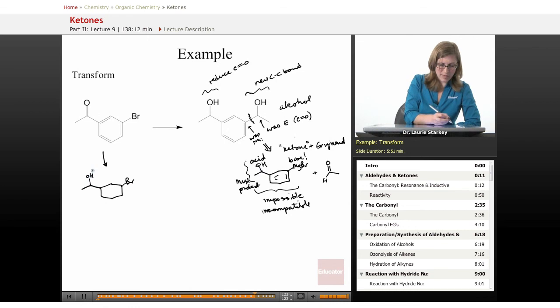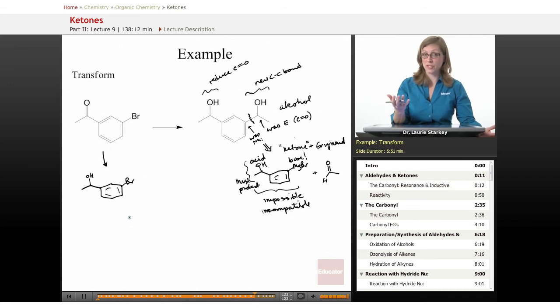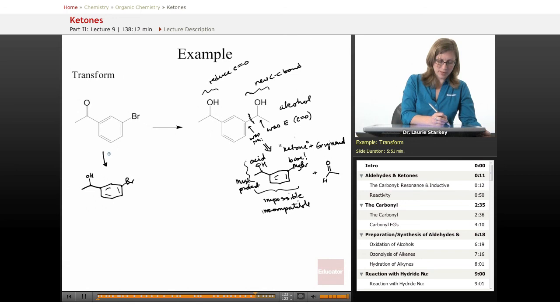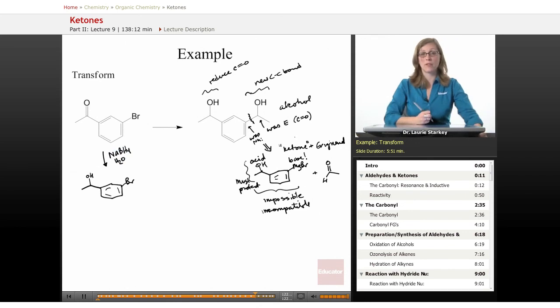How do we go from a ketone to an alcohol? Looks like we've lost a CO bond, it's a reduction reaction, a reducing agent. Who do we use? Something like lithium aluminum hydride or sodium borohydride. We could do sodium borohydride and some kind of protic solvent like methanol or water, ethanol. We can do that reduction reaction, no problem.